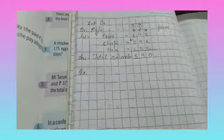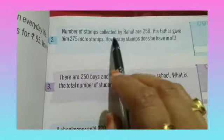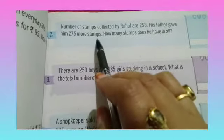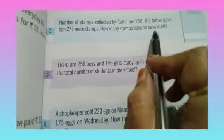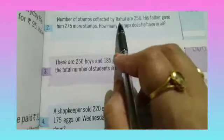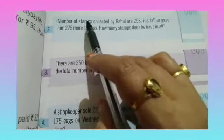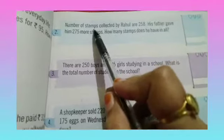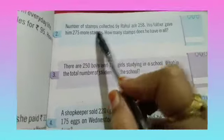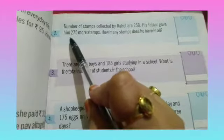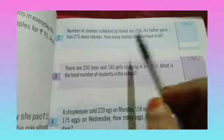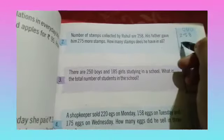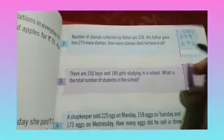Now let's see question number 2. The number of stamps collected by Rahul are 258. His father gave him 275 more stamps. How many stamps does he have in all? Rahul collected stamps, and his father gave him more. So stamps from Rahul: 258. Rahul's father gave him 275 more stamps. We need to find the total number of stamps.